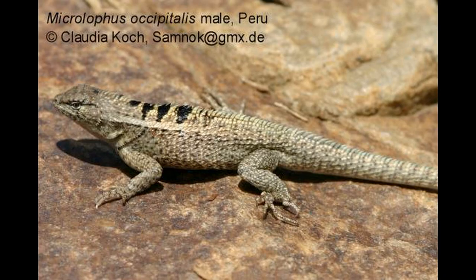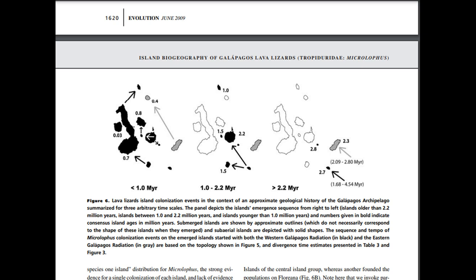One way researchers know that the islands were not colonized just once is that the eastern radiation lizards form a clade sister to the South American M. occipitalis, the Peruvian Pacific iguana, which is mainly found in Ecuador and Peru. The western radiation arrived first, with the ancestor of M. delanonis reaching Española 4.54 to 1.68 million years ago. From there, populations dispersed to Santa Cruz about 2.2 million years ago, from Santa Cruz to Pinzon about 1.5 million years ago, and from Pinzon to Santiago about 800,000 years ago. A separate population dispersed from Española to Floriana about 1.5 million years ago, and then from Floriana to Isabela about 700,000 years ago. From there, two populations dispersed independently to Fernandina and Pinta about 300,000 years ago.